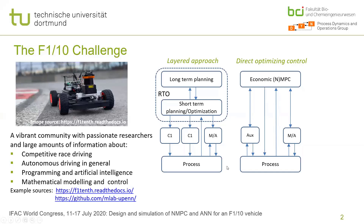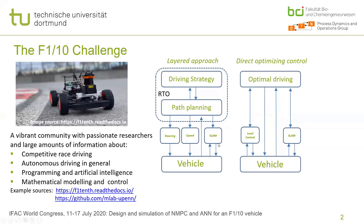If we were to translate this to driving, then we might think of the upper layers as the driving strategy and path planning, which provide set points for steering controllers and speed controllers which can actually steer the vehicle. The information about the environment is parsed by a SLAM algorithm — a simultaneous localization and mapping algorithm — which feeds back information about the car's position, the track, and the environment.